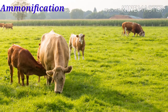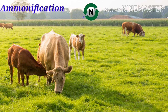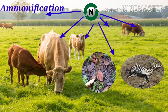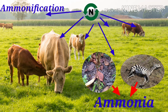Ammonification: In this process, the nitrogen present inside plants and animals in organic form is returned back to the soil in the form of ammonia. When plants and animals die, organic nitrogen present in their bodies is converted into ammonia by microbes such as bacteria and fungi.